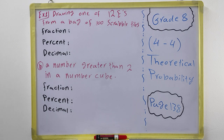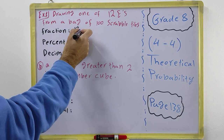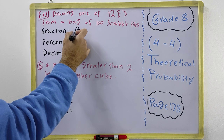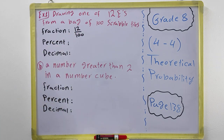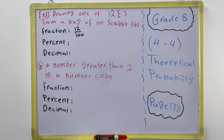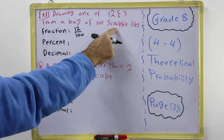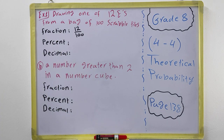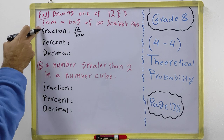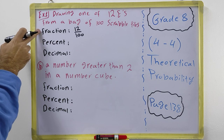What's the probability to draw one of these 12 E's from the 100 cards? The theoretical probability: we have 12 E letters on 100 cards, so as a fraction we write 12 over 100. The question normally tells you whether to write only as a fraction or in other forms.